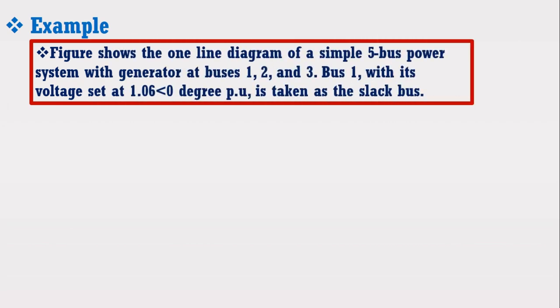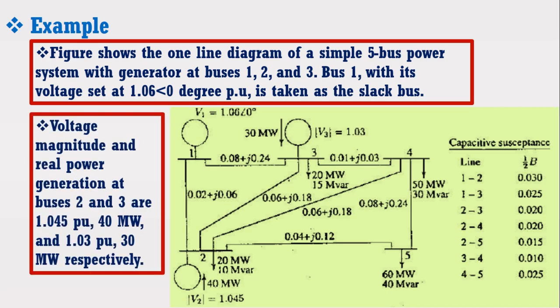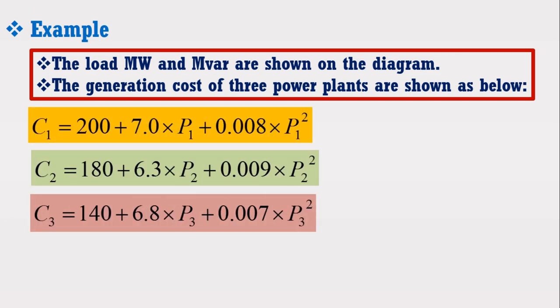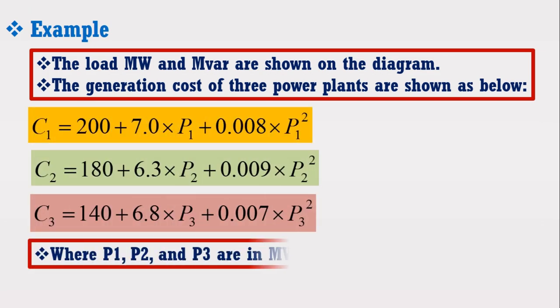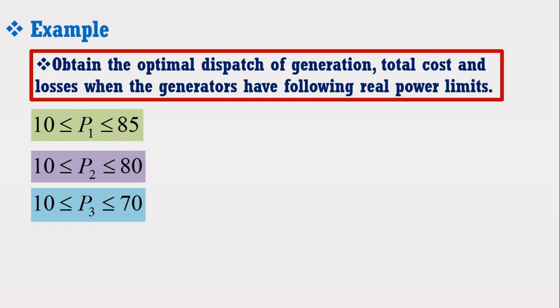Consider the example which consists of a 5-bus power system having generators at buses 1, 2, and 3. The bus voltages and other data are given as shown in the figure. The generation cost functions of the three power plants are given in the following equations, where P1, P2, and P3 are the power supplied by three power plants in megawatt. We have to find the optimal dispatch of generation, total cost and losses when the generators have the following minimum and maximum real power limits.